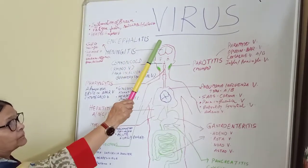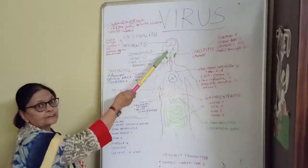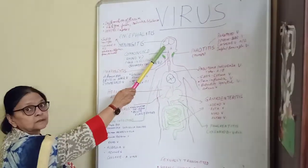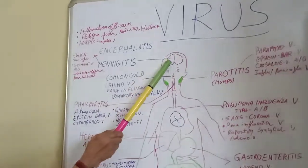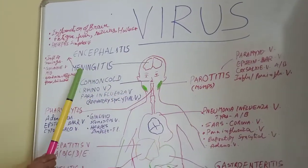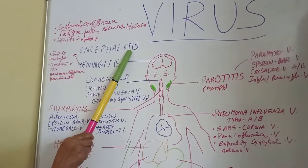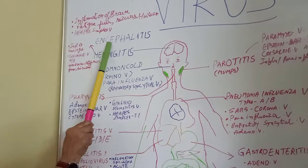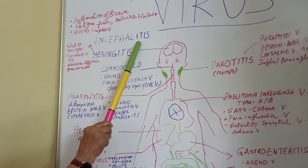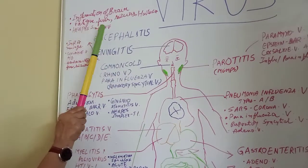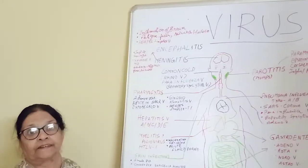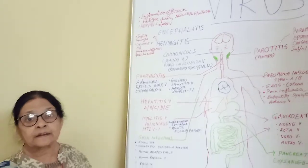Virus infects from head to toes. There is no place that it cannot affect in a human body. Let us see the brain first. Brain viral diseases are encephalitis and meningitis. Encephalitis is the inflammation of brain cells.